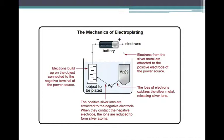Now, the electrons from the silver metal are attracted to the positive electrode. So you are basically oxidizing the silver metal and releasing these silver ions into the solution. The loss of electrons oxidizes those silver metals, and then those ions in solution will be attracted to that negatively charged cathode and plate.